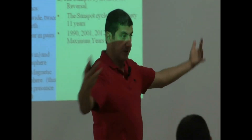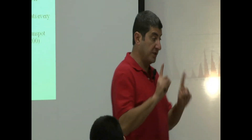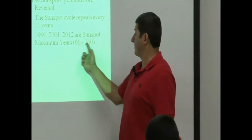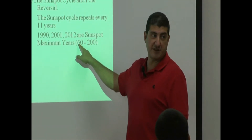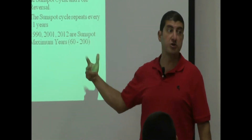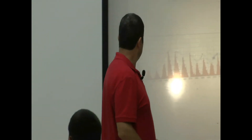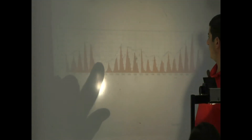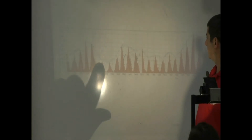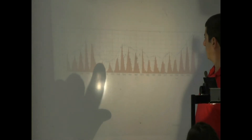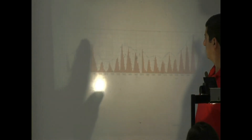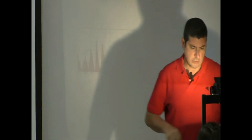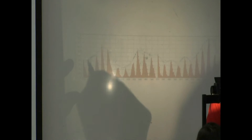Even between that range there's a big difference: if only 60 appear, the sun is not very active; if 200 appear, that's more dangerous. Do you notice any overall pattern? You see the maximums in the 1800s are kind of low — even when it is maximum, the number is low. I was trying to find out if there was an overall pattern by connecting the maximums.